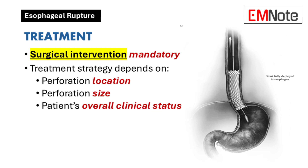Once esophageal rupture is confirmed, surgery is necessary. The choice of surgical approach depends on several factors, including the location and size of the perforation, as well as the patient's overall condition. Surgeons carefully evaluate these factors to determine the most appropriate treatment plan.